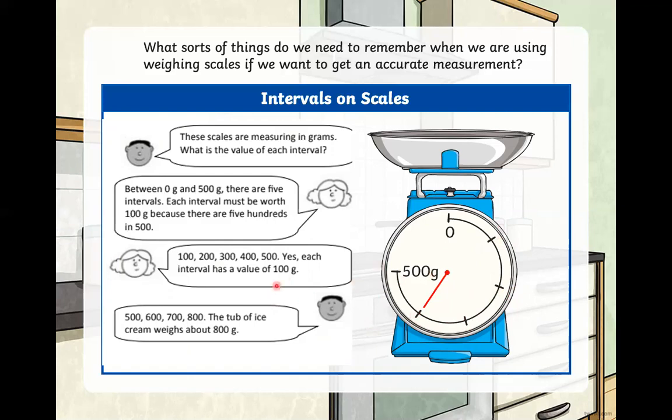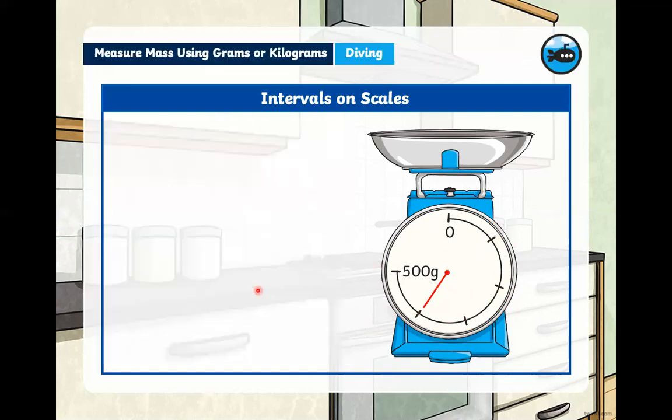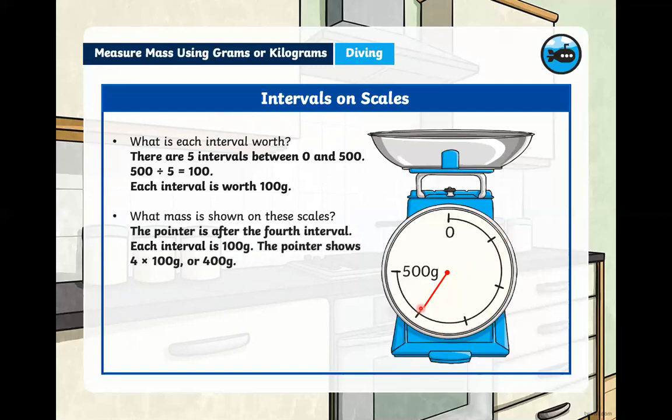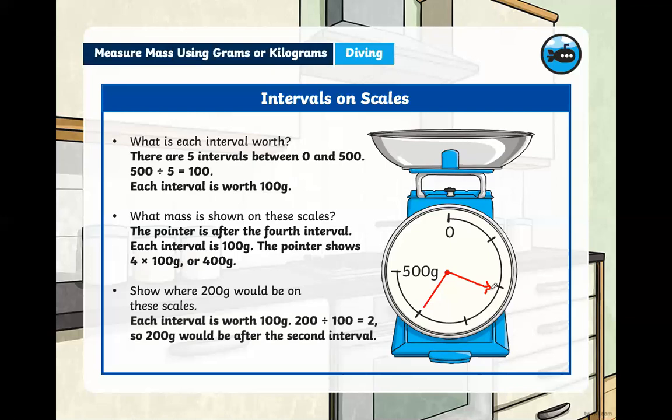We can look at this scale now and see that. What is it pointing to? It is pointing to 400 grams. And this is what we said, 500 divided by 5, those five points. So we know each one's 100. So 100, 200, 300, 400. Perfect. The point is after the fourth interval. So we know it's 400 grams. And last question, where would 200 be on these scales? So I know this is 0 grams, 100 grams, 200 grams. So I would draw it after the second interval.